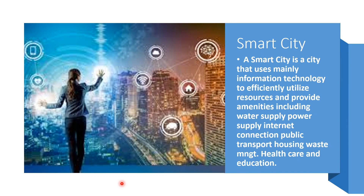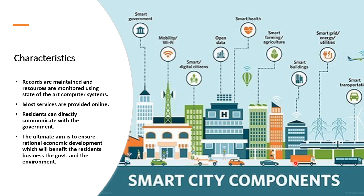In this part of the lesson we are going to learn another very important aspect of urbanization — a smart city. What exactly is a smart city? As the name suggests, a smart city is a city that uses mainly information technology to efficiently utilize resources and provide amenities including water supply, power supply, internet connection, public transport, housing, waste management, and also caters to healthcare and education.